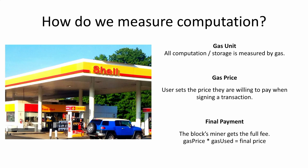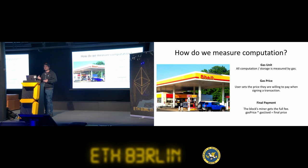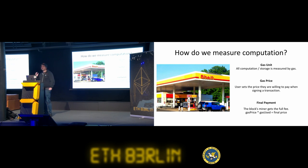The last thing to consider is gas. The whole point of gas is to prevent spam on the network. Ethereum doesn't really scale — if you allow too many transactions, the database keeps getting bigger and becomes unmanageable. So we rate-limit the number of transactions to constrain how big the database can get, and we use gas for that. Gas is a standard metric in the EVM. There are opcodes like add, subtract, store, and read, and every opcode has a fixed gas cost.